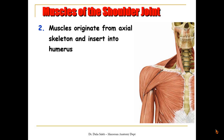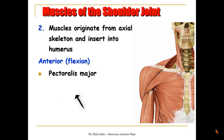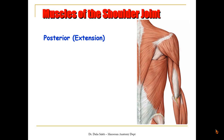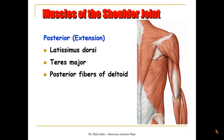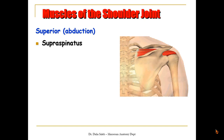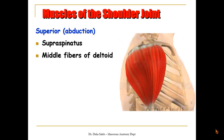The second group originates from the axial skeleton and inserts into the humerus. Anteriorly placed muscles cause flexion: the pectoralis major, anterior fibers of deltoid, and coracobrachialis. Posteriorly placed muscles cause extension: the latissimus dorsi, teres major, and posterior fibers of deltoid. Superiorly placed muscles cause abduction: the supraspinatus and the middle fibers of deltoid.